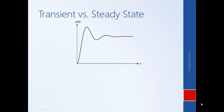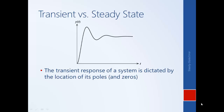Here we have a typical output response for a dynamic system. So far in the course we have learned that the transient response of a system is dictated by the location of its poles and zeros, where the transient response is when the system's response is changing. The poles and zeros define aspects of this transient behavior — things like overshoot, settling time, and peak time.